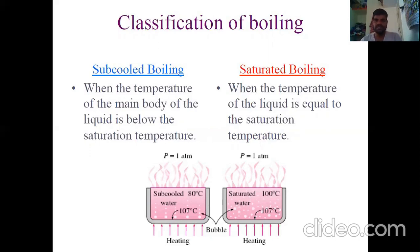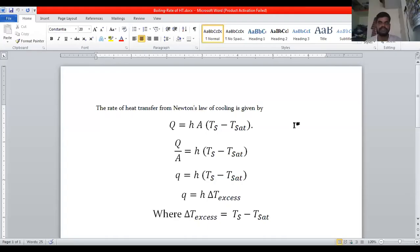In classification, boiling is divided into pool boiling and flow boiling, and each is further classified into sub-cooled boiling and saturated boiling depending upon the temperature of the liquid present. The boiling process is a form of convection heat transfer.